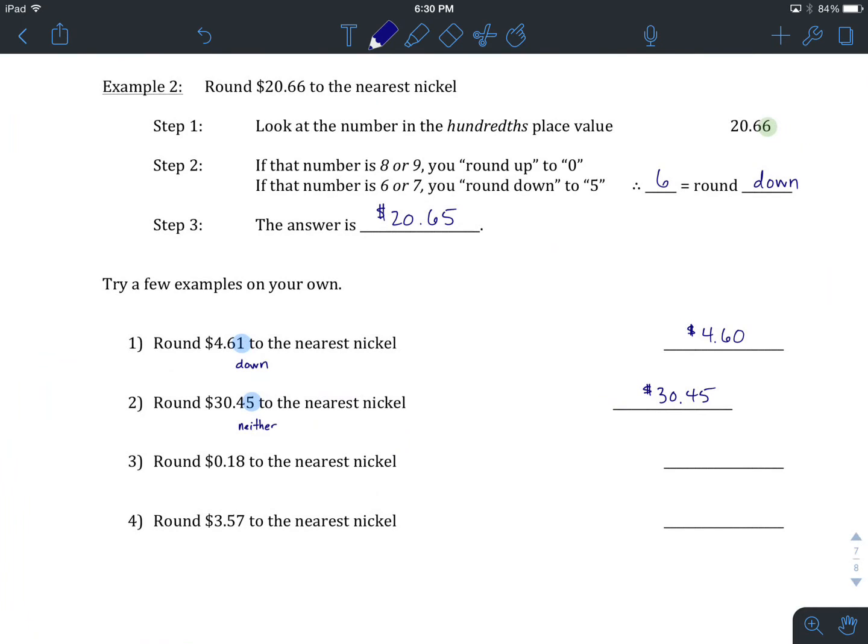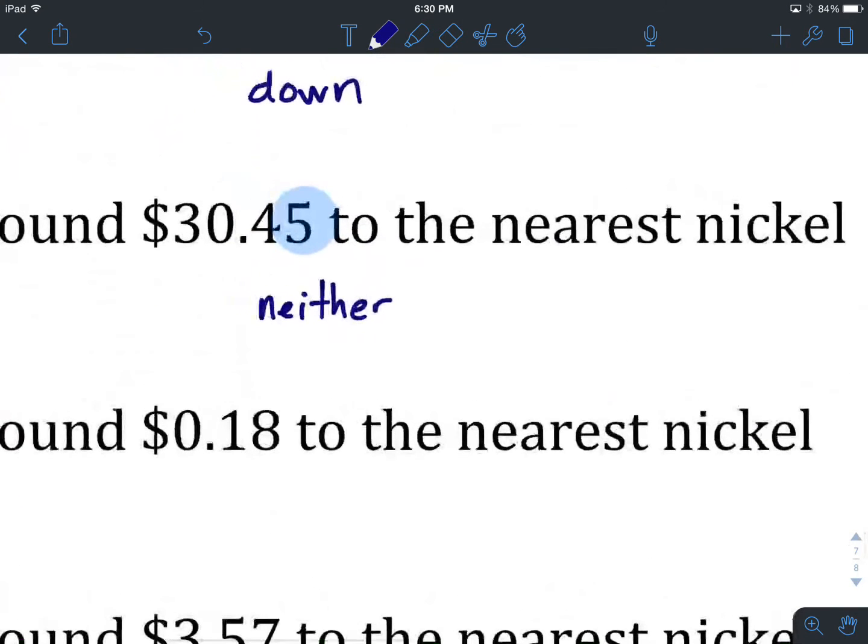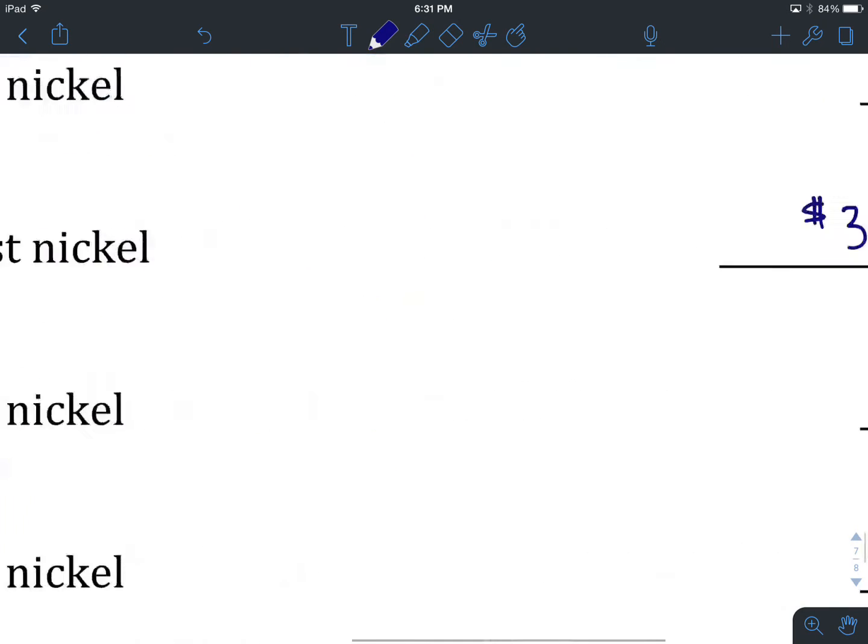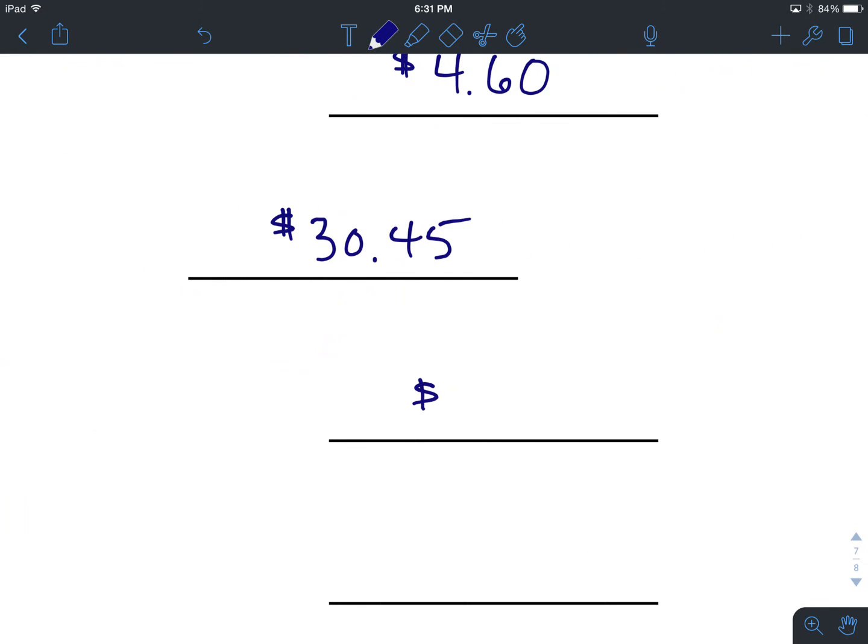Number three. We have $0.18. First step, find the hundredths. It is an eight. At this point, we are either going to round up to $0.20 or round down to $0.15. We're going by multiples of five if we're skip counting by five. If we check back higher in the note, eight or nine means that we are going to be rounding up. So in this case, we are going to round up to $0.20.